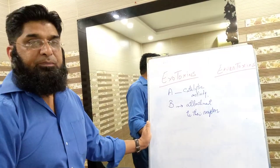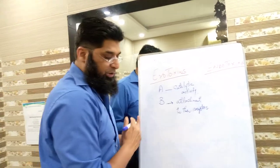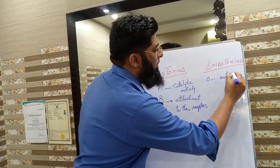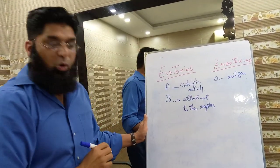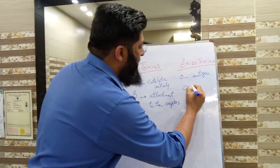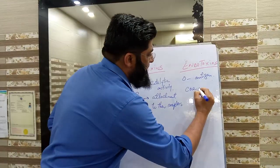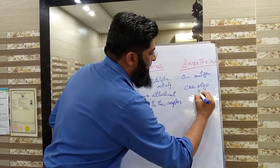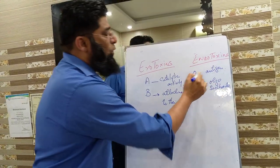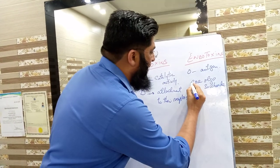Endotoxins have three subunits: the O antigen, the core oligosaccharide, and Lipid A.